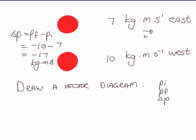Now that negative doesn't mean it's a negative value. Remember it's a vector. So it's actually telling me that it's 17 kilograms meter per second west.